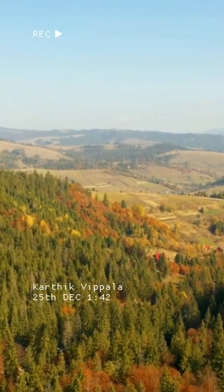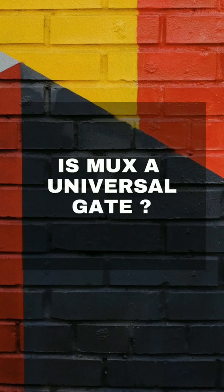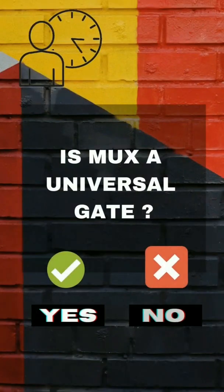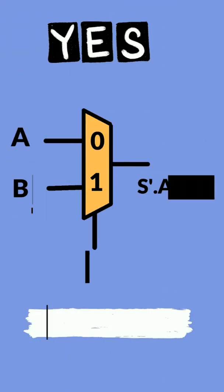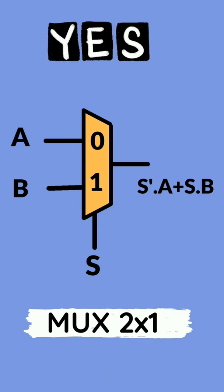Hey guys, welcome back to another interesting topic. Is a multiplexer a universal gate? Yes, a multiplexer is a universal gate because any boolean function can be implemented by using it.